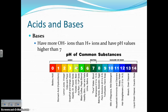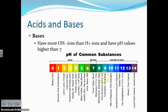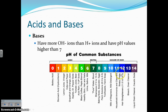Bases have more hydroxide ions — OH negative ions — than hydrogen ions, and have pH values greater than 7. Strong bases include Drano and bleach. Ammonium and soapy water are also bases — things that feel soapy to the touch are often bases, as that is a characteristic of a base. Milk of magnesia and toothpaste are also basic.